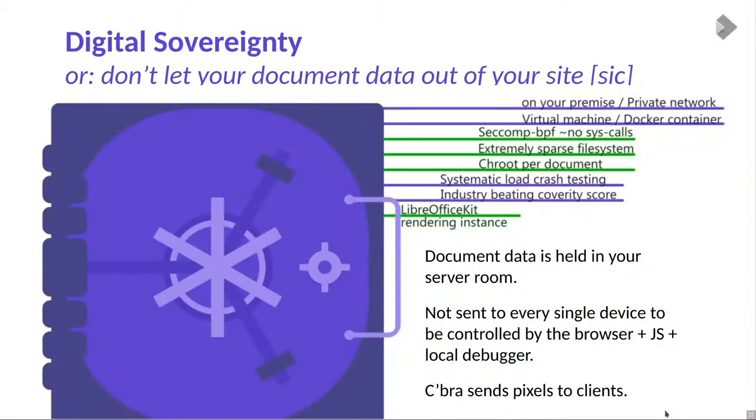We use Google OSS-Fuzz, which runs huge clusters of nodes using evolutionary algorithms to find code coverage issues and minimize test case reproducers. This robust work happens inside the LibreOffice kit core. If you're even more worried, you can wrap it in virtual machines. It all runs on your server room on your network, and what we send to devices is essentially pixels — or more precisely, the layout and geometry of documents — so document data never leaves your server room.